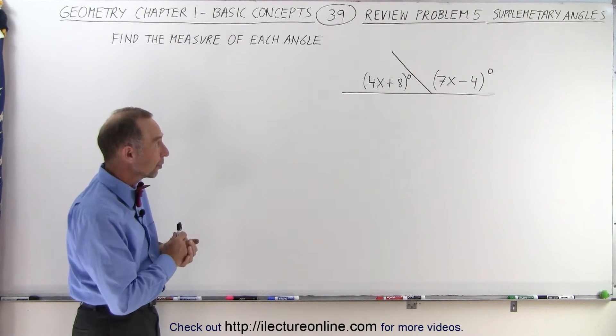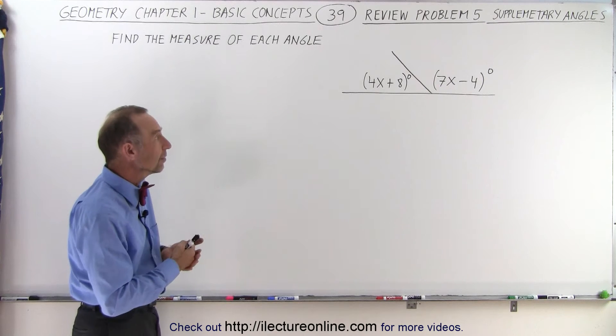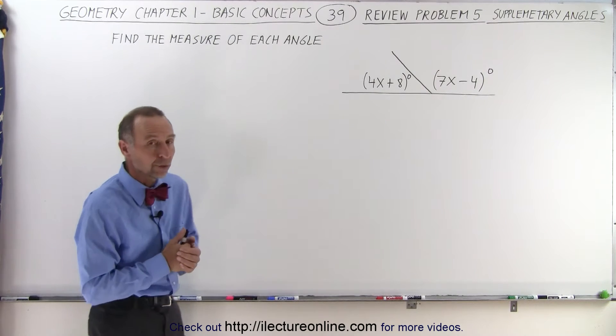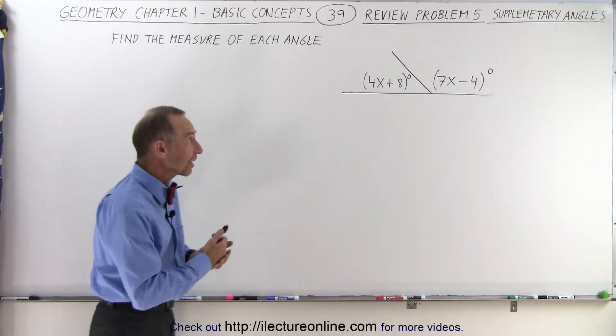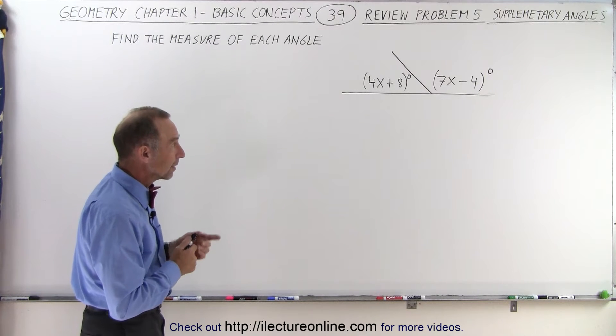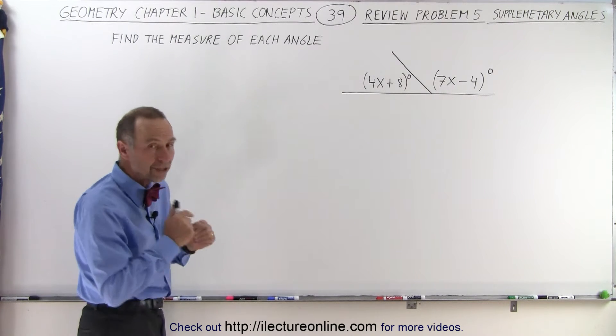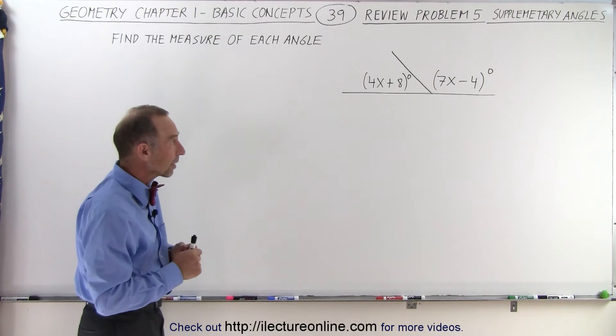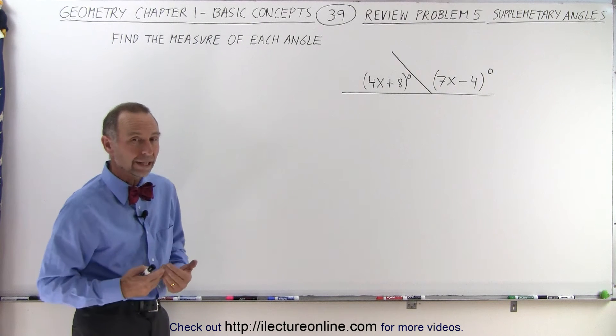On the left side we have an angle which is equal to 4x plus 8 degrees and on the right side we have an angle which is expressed in terms of 7x minus 4 degrees. Now these are supplementary angles and because they're supplementary angles we know that they must add up to 180 degrees.